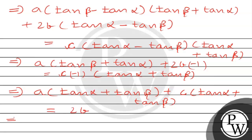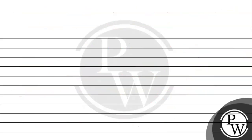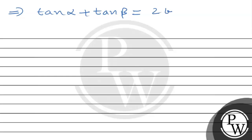A in terms of (tan α plus tan β). This is equal to 2B divided by A plus C.